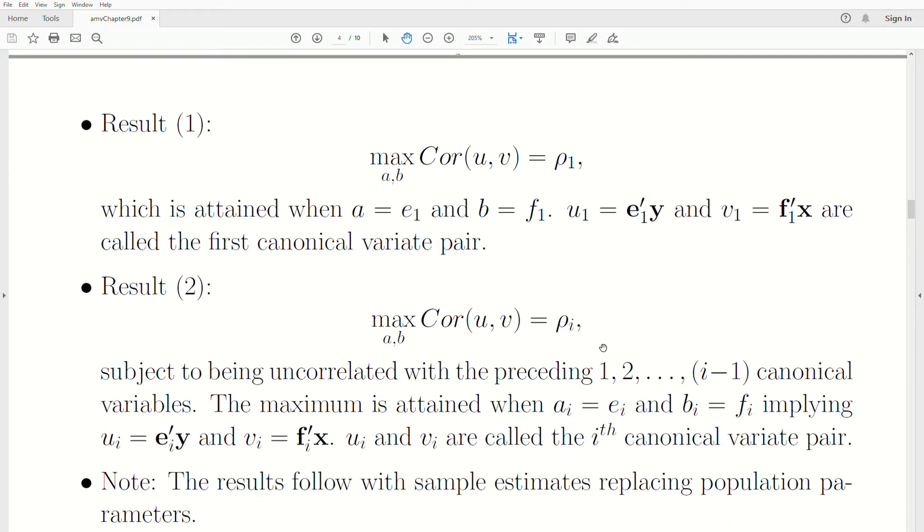So the result 2. So this is just saying that if we put in the other eigenvectors, so e2 and f2, it's also associated with the maximum correlation of linear combinations of the variables. But there's a restriction in that it's uncorrelated with the previous canonical variables, right? So it is a maximum under that restriction. So the maximum was attained when we put in the respective eigenvectors, ei and fi, implying that ui and vi create a maximum correlation between these linear combinations subject to their uncorrelated with all the previous variate. And it's called the ith canonical variate pair.